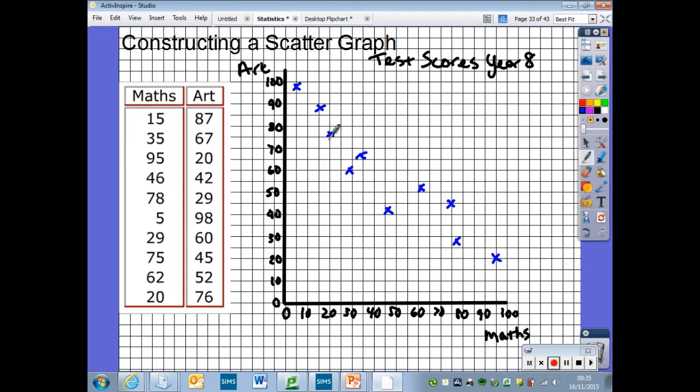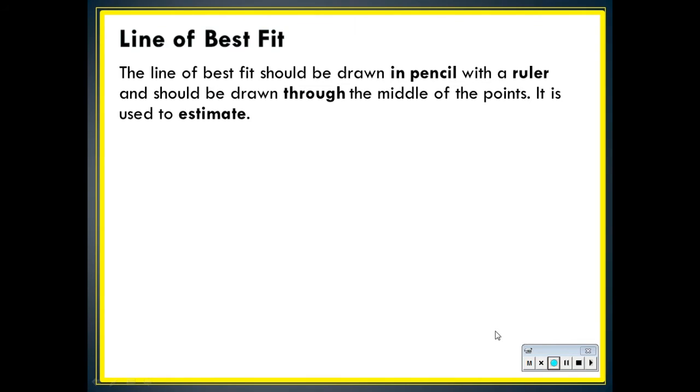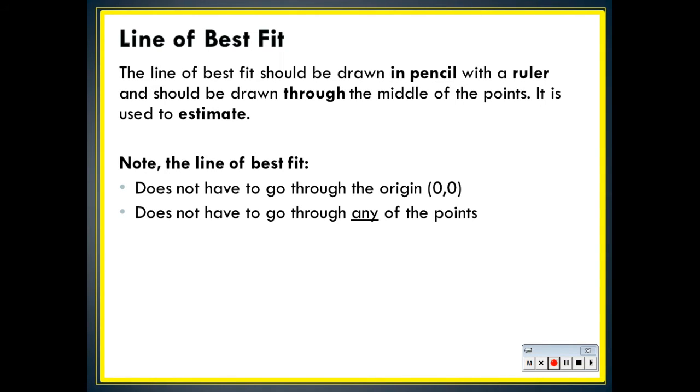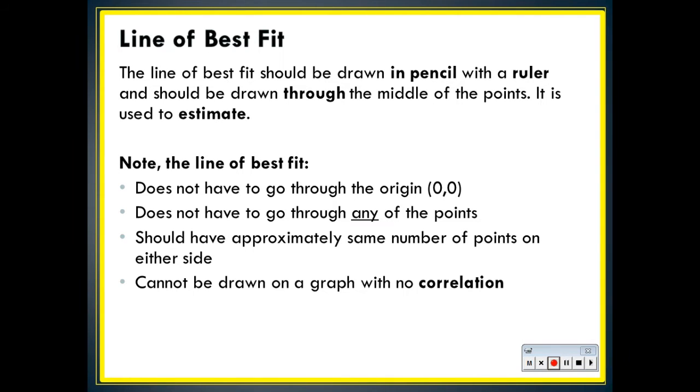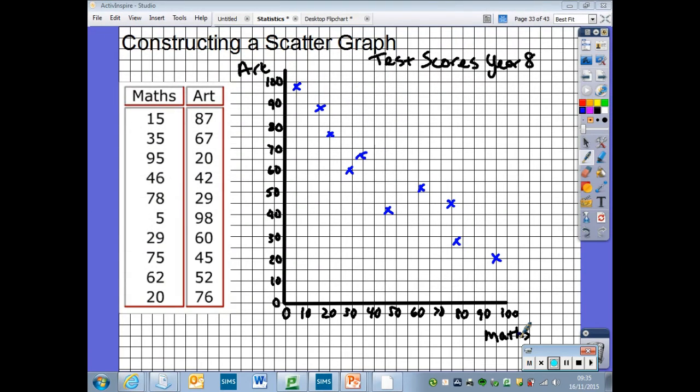So is there a link between the maths and art scores? A line of best fit should be drawn in pencil with a ruler and should be drawn through the middle of the points. And it's used to estimate. Note the line of best fit does not have to go through the origin, does not have to go through any of the points, should have approximately the same number of points on either side and cannot be drawn on a graph with no correlation.